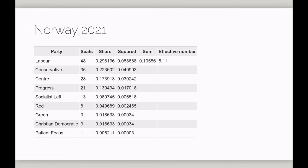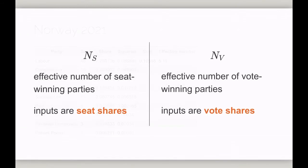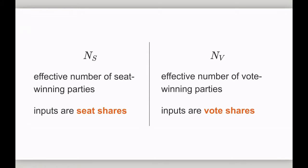The effective number of parties can be calculated for seat-winning parties, or for vote-winning parties. When you calculate the effective number of seat-winning parties, you use each party's share of total seats. And when you calculate the effective number of vote-winning parties, you use each party's share of total votes.